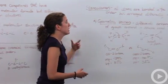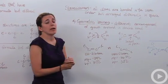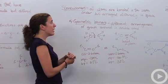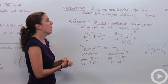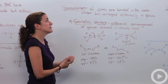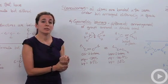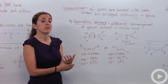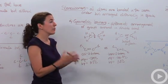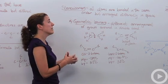Another type of isomer are stereoisomers. Stereoisomers are when all atoms are bonded in the same order but are arranged differently in space. This is a bit more difficult to comprehend and understand.